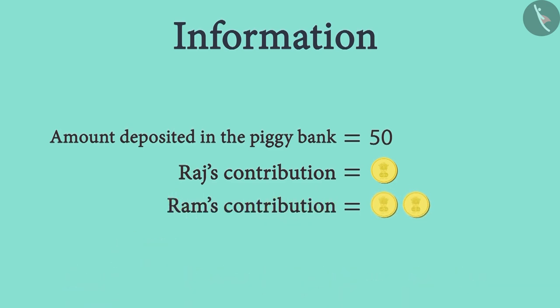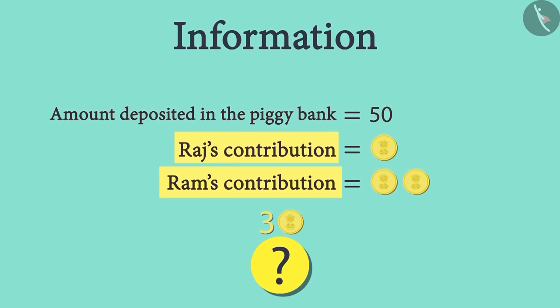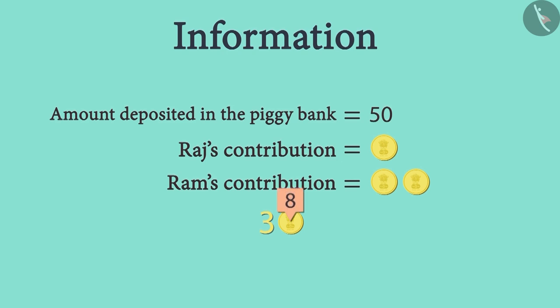Now the total number of coins is 3. This coin helps us keep the information about the amount that we do not know but would like to find. The value of this coin can be any number, and because of this reason, it is called a variable.